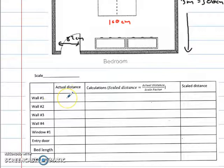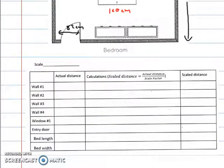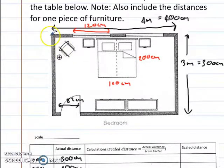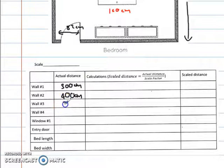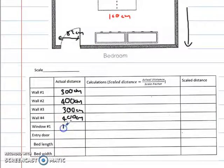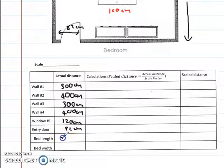We've done everything in centimeters and now we're going to come down to the table given in your assignment. Some people asked if this is all you need to do — no, it's just the start to help with your calculations. We'll start by putting actual distances in. Wall one is 300 centimeters, wall two is 400 centimeters. Wall three and wall four are the same — 300 and 400. Window one is 120 centimeters, entry door is 82 centimeters, bed length is 200 centimeters, and bed width is 160 centimeters.